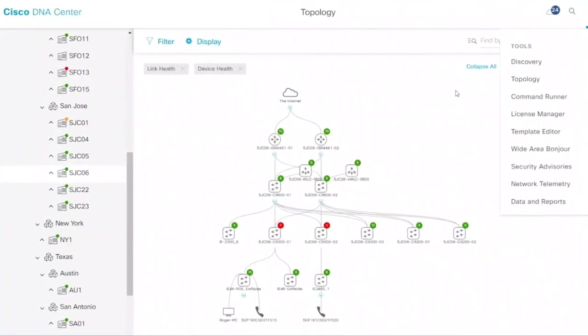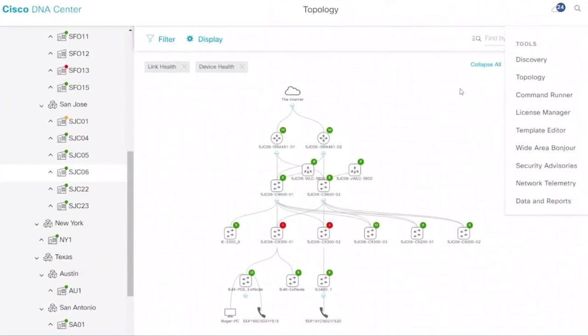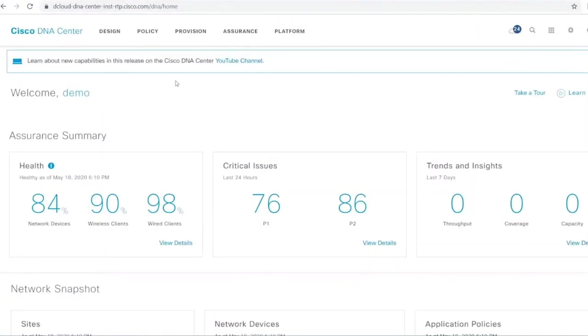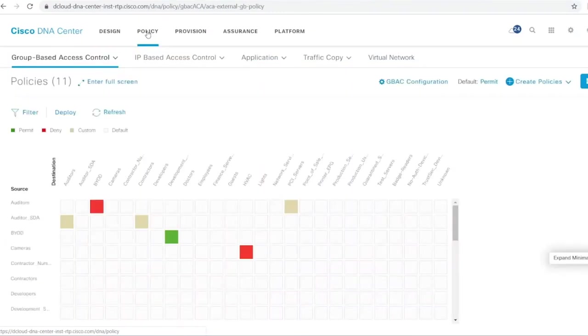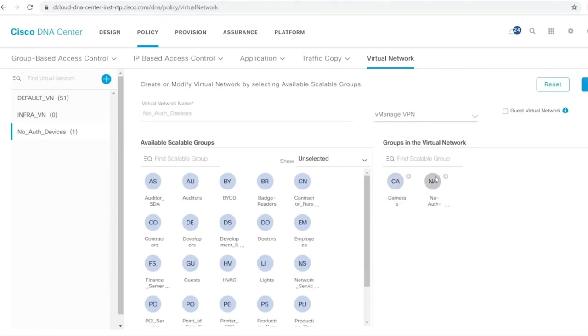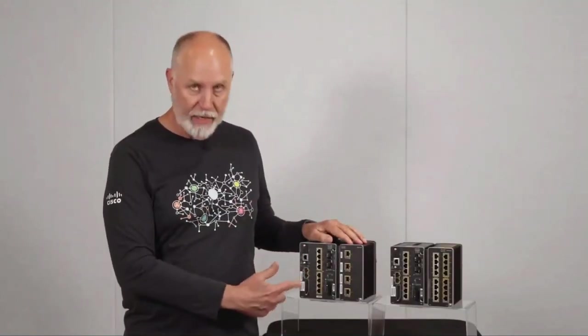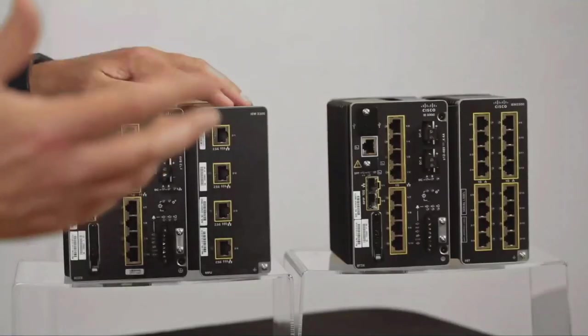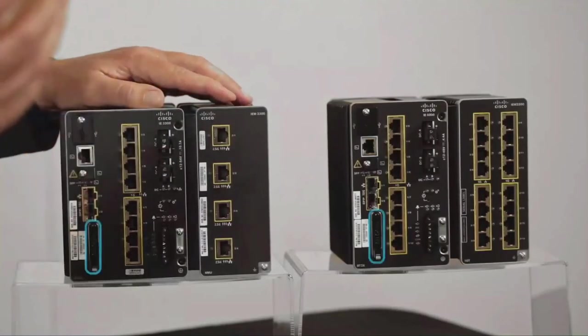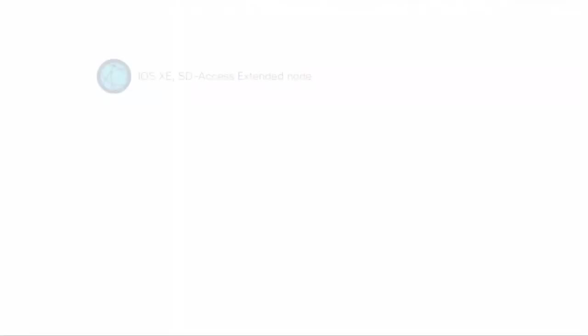If you're doing software defined access or SDA, these will also work with your intent based networking security policies, and they will be supported as an extended node in your SDA, allowing you to build macro segmentation policies. And then we've also added some DRAM into these two by 10 gig modules. So the 10 gig uplink modules have more DRAM. And so they will also now support IOX and hosting applications.